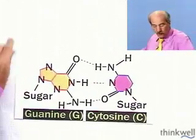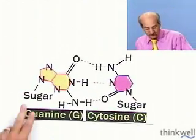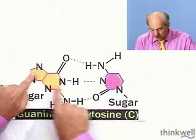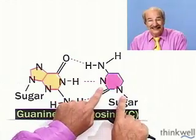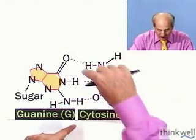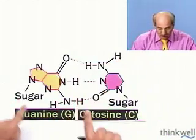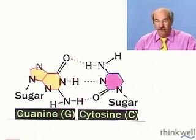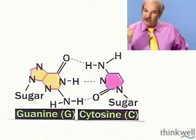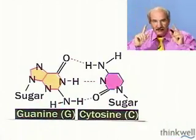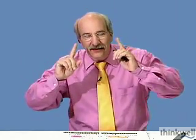Let's take a look at the other part of 'PUGA 2': guanine. Guanine, with its two-ring structure, always bonds to cytosine. And once again we have the purine-pyrimidine bond.